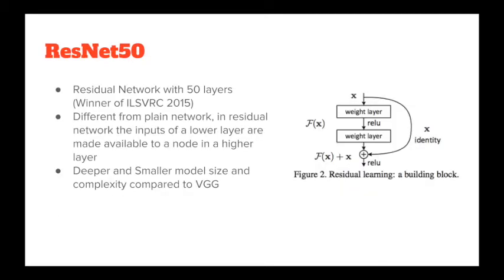ResNet stands for residual network. Residual network was proposed by researchers at Microsoft Research and won the ImageNet large-scale visual recognition challenge in 2015. It is constructed by repeating the macro-architecture building block shown on the right. One of the major differences between a plain ConvNet and ResNet is that inputs of a lower layer are made available to a node in a higher layer. Such structure successfully solves the problem of vanishing gradients, making it possible to train significantly deeper networks. We choose ResNet50 over VGG because it has a deeper architecture but a smaller model size and complexity.